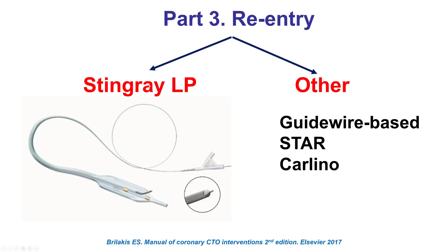Reentry is most commonly done using the Stingray system over guide wire-based techniques. The Stingray consists of a Stingray balloon and a Stingray guide wire. The Stingray balloon is flat when inflated, self-oriented, with one surface facing the true lumen and the other surface facing the adventitia, and has two exit ports — one facing one direction and the other facing the other direction. The Stingray guide wire is a very stiff wire, like the Confianza, with a distal prong at the tip, advanced over the two exit ports until it finds the port that faces the distal true lumen.